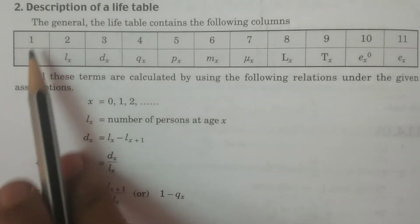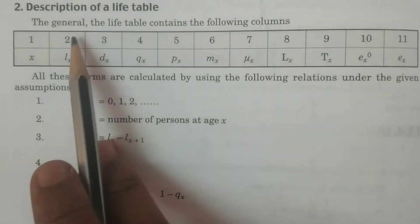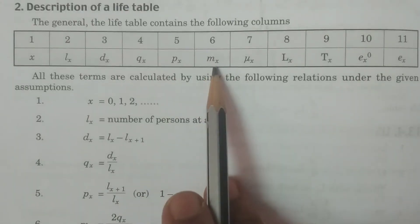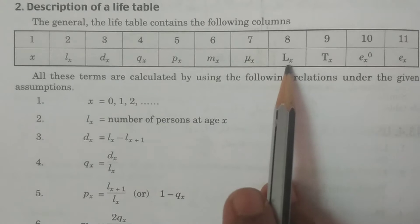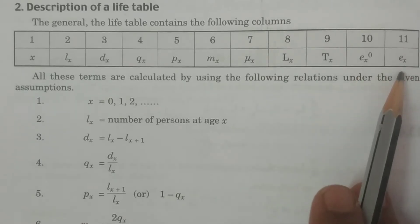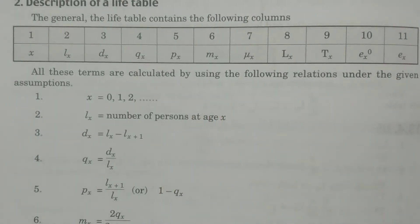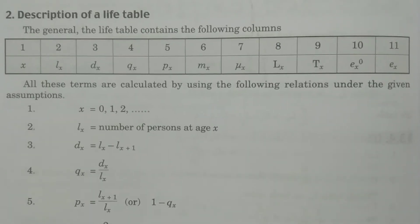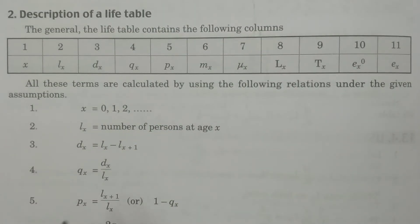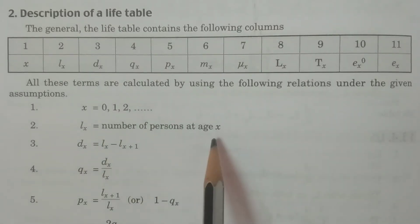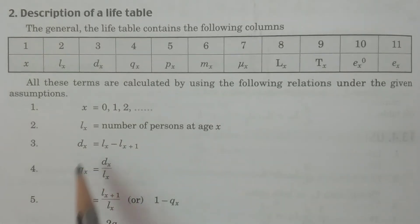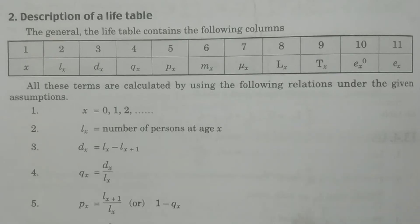The first column is X — that is age, where X = 0, 1, 2 and so on. The second column is lx — number of persons at age X. The third column is dx, where dx = lx minus lx+1. The fourth column is qx, fifth is px, sixth is mx, seventh is mu(x), eighth is capital Lx, ninth is capital Tx, tenth is ex-naught, and eleventh is ex.